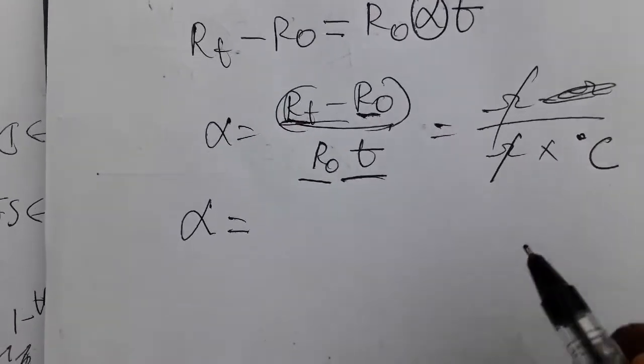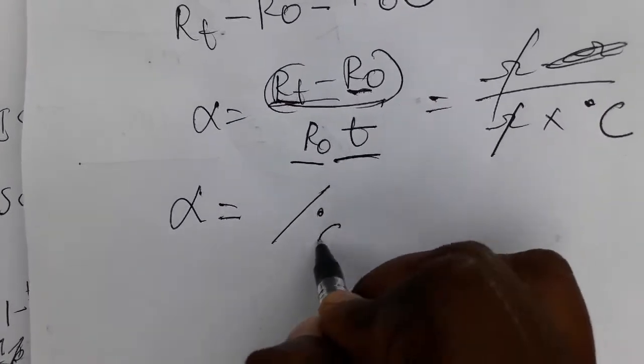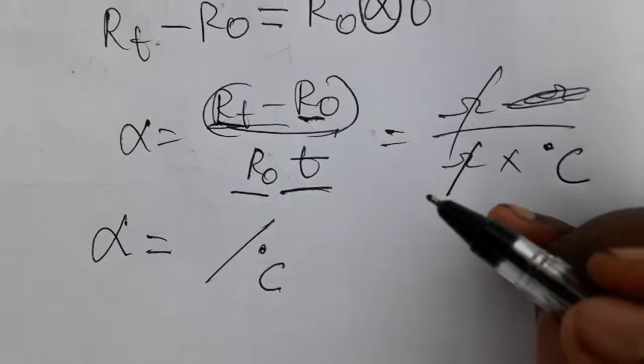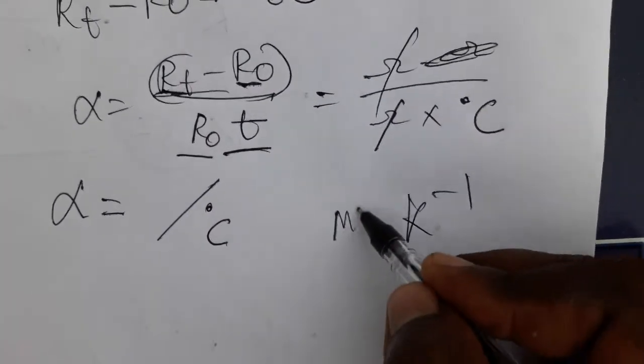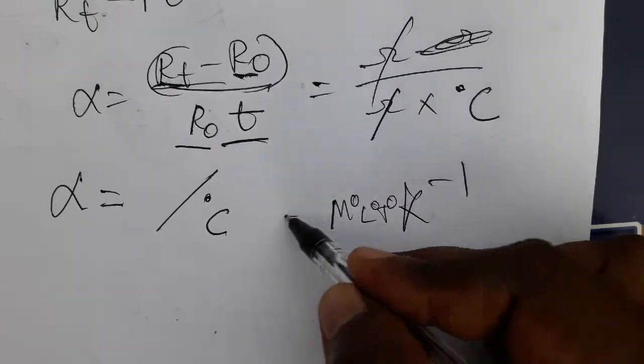Alpha, the temperature coefficient, is per degree Celsius. For dimensional formula we won't get any dimensional formula here, only Kelvin inverse. M power 0, L power 0, T power 0, only Kelvin inverse as dimensional formula.